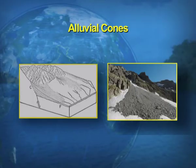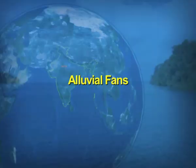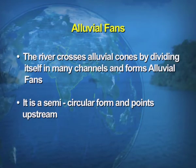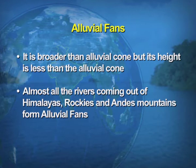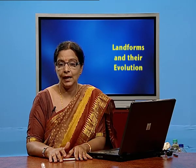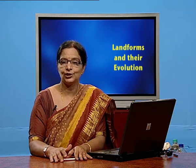This visual shows how alluvial cones are formed when the river leaves the mountain area and enters the plain. Another feature is the alluvial fan. The river crosses the alluvial cones by dividing itself into many channels, forming a fan shape, which is known as an alluvial fan. It is broader than the alluvial cone but its height is less. The rivers of the Himalayas, Rockies, and Andes Mountains have various formations of alluvial fans.